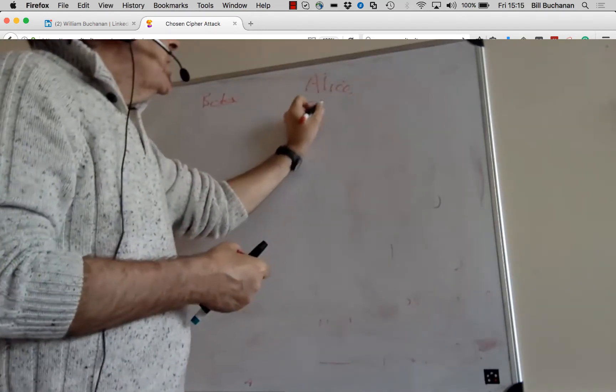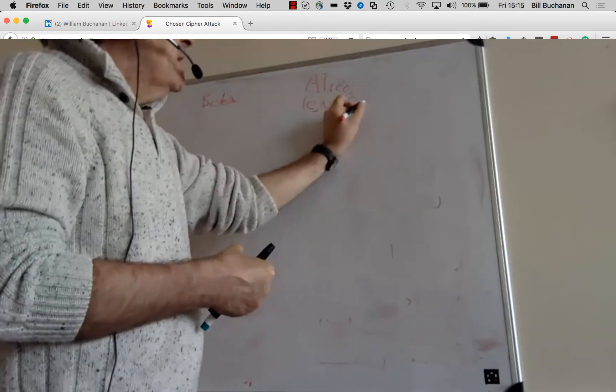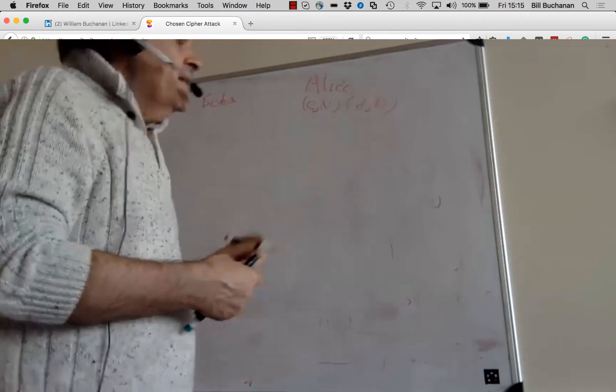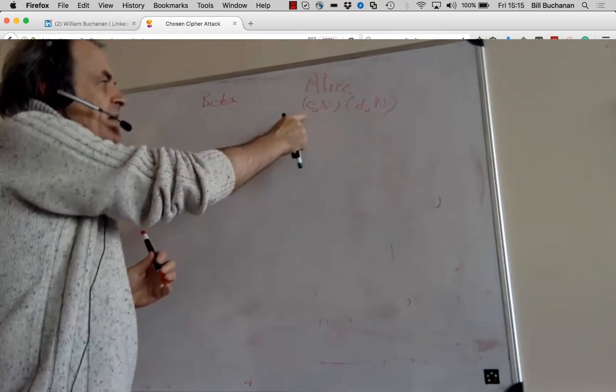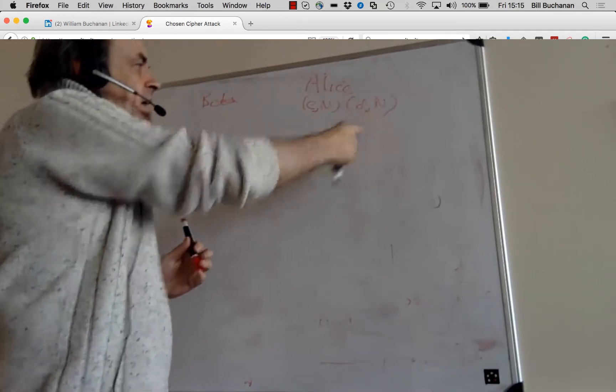Alice creates her encryption key and has an associated decryption key. So she has E and N, and D and N.